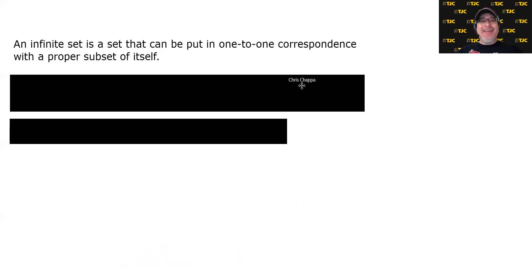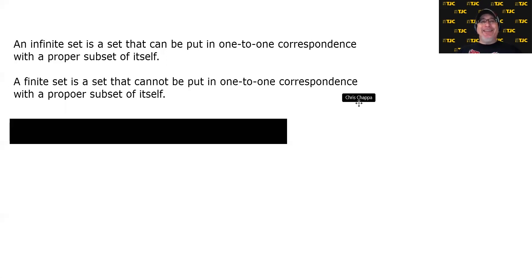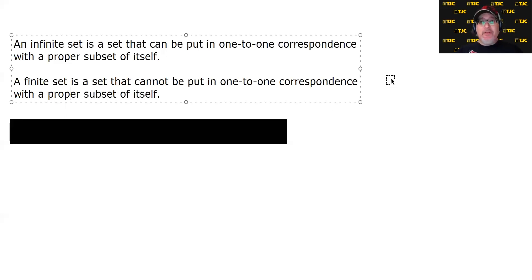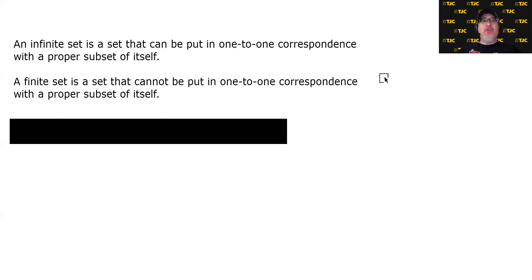An infinite set is a set that can be put in one-to-one correspondence with a proper subset of itself, meaning that if we remove a small number of elements to get a smaller subset, we can still match everybody up because both sets are infinitely large. By contrast, a finite set is a set that cannot be put into one-to-one correspondence with a proper subset of itself. We can redefine finite or infinite by asking: can I put you in a one-to-one correspondence with a proper subset of yourself? If I can, you're infinitely large; if I can't, you're finite.